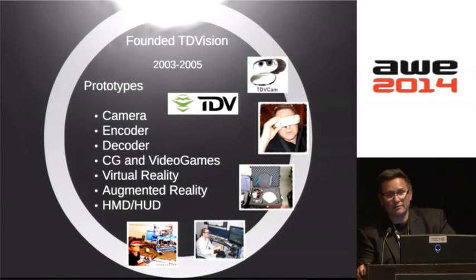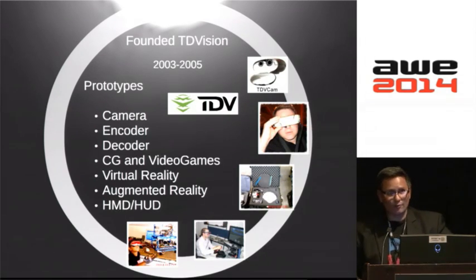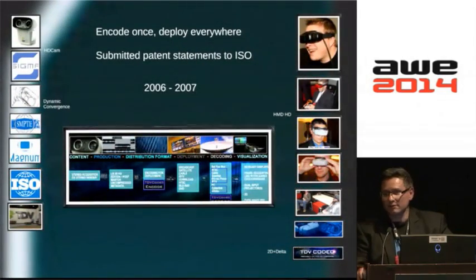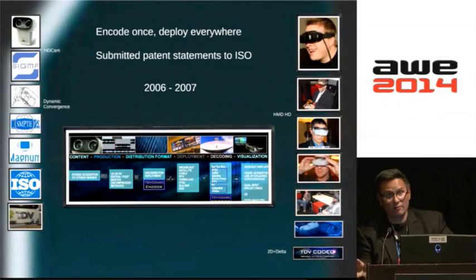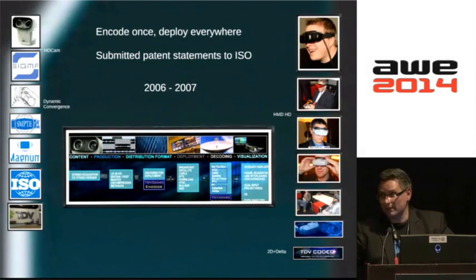So I created my own camera — high definition — my own encoder, my own decoder running on the computer. I created some virtual reality games and some augmented reality platforms. And I ended up creating my own head-mounted display, because nothing in the market was making justice to full high definition. So I created the concept of encoding once, deploying everywhere. I submitted my patent statements to the ISO back in 2007, thinking that if somebody in the future was willing to do 3D, this could help. I joined some of the ISO and MPEG organizations, and started creating prototypes and demonstrating the full pipeline from acquisition of 3D all the way to deployment, delivery, and visualization.